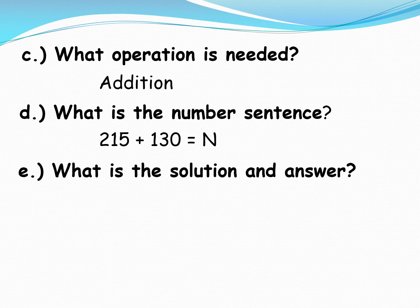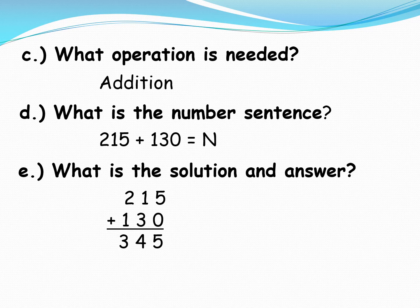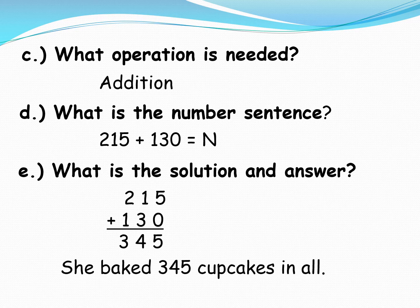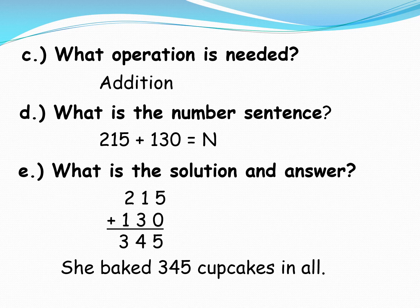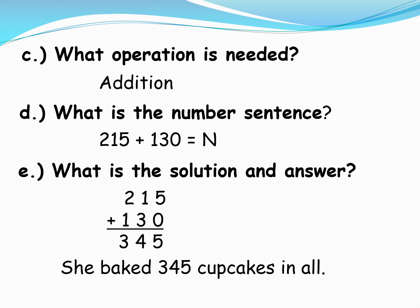What is the solution and answer? 215 plus 130. So 5 plus 0 is equal to 5. 1 plus 3 is equal to 4. 2 plus 1 is equal to 3. So the answer is, she baked 345 cupcakes.